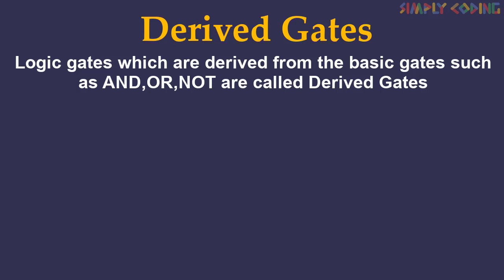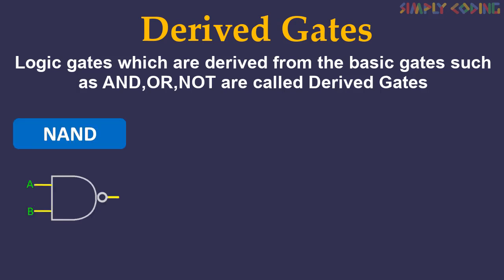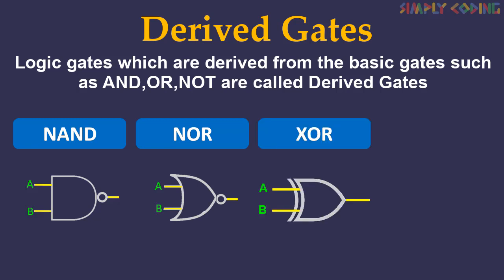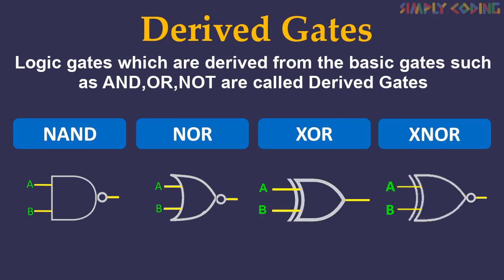There are four derived logic gates: NAND gate, NOR gate, XOR gate, and XNOR gate.